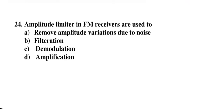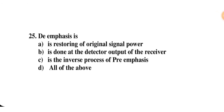Amplitude limiter in FM receivers is used to — remove amplitude variations due to noise, filtering, demodulation, or amplification. Noise is additive, so the amplitude limiter removes amplitude variations due to noise. A is the correct option.